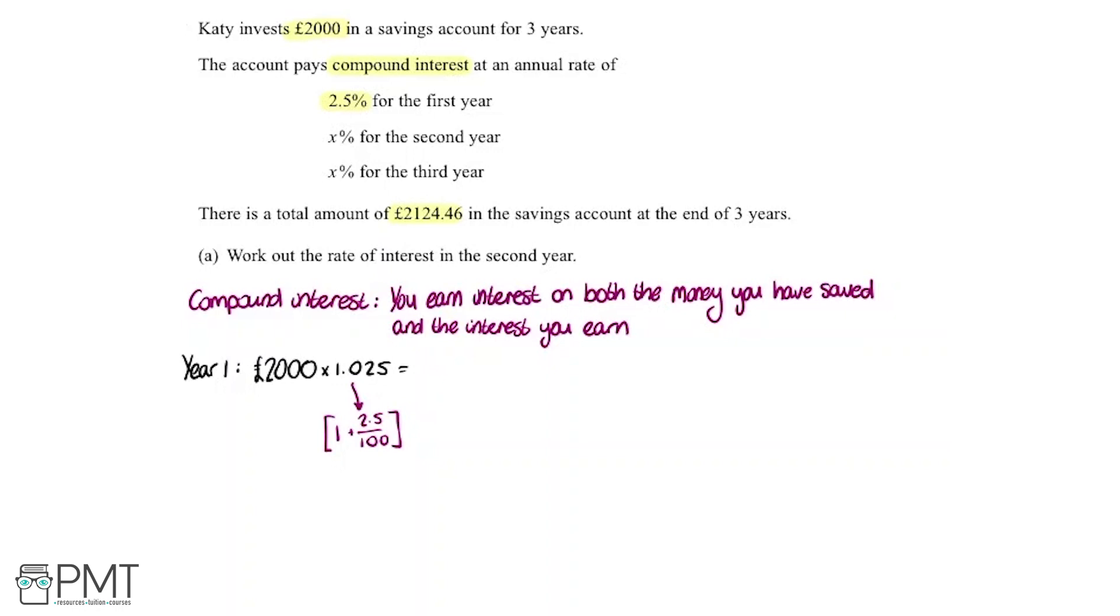Putting this into the calculator, we get that at the end of the first year, KT is going to have £2,050.